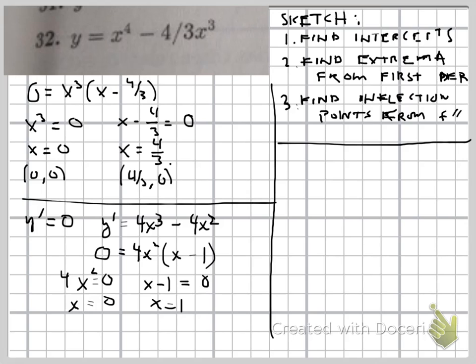The first derivative test, what we can do is set up a number line and just figure out in each of these intervals. So we know, just based on what's happening with y prime, we know that at the point zero, the y prime will equal zero, and at one, it will also be zero.